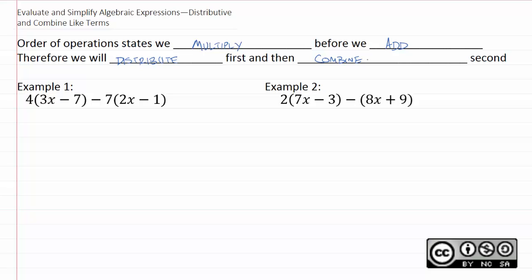So then, if we look at our first example here, I'll begin by using the distributive property. 4 times 3 is 12x minus 28. Negative 7 times 2 is negative 14x. Negative 7 times 1 is positive 7.